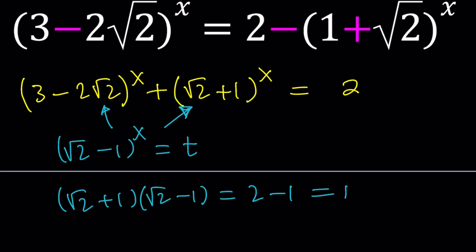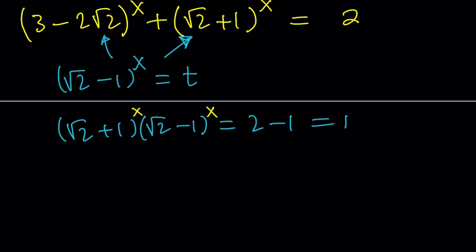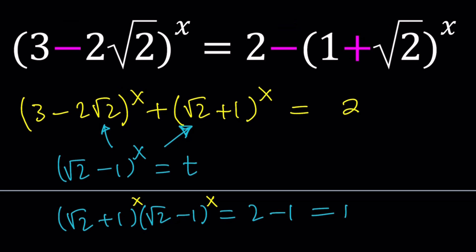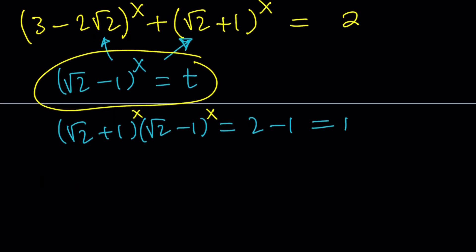Awesome. Now, we can raise both sides to the power x and the answer is not going to change because 1 to the power x is still 1. This is really cool because we do have (√2+1)^x in our expression and we just named this t.